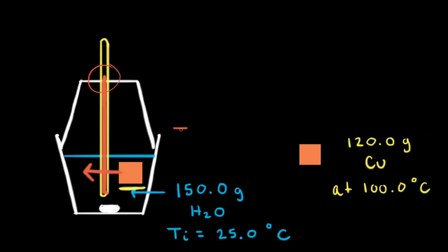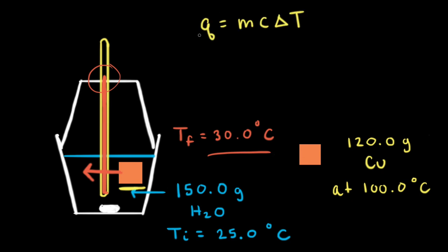Let's say the final temperature is equal to 30.0 degrees Celsius. So at thermal equilibrium, both the copper block and the water are at the same final temperature. Next, let's calculate the heat gained by the water using the equation Q = mcΔT. Q is what we're trying to calculate — the heat gained by the water. M is the mass of the water, which is 150.0 grams.